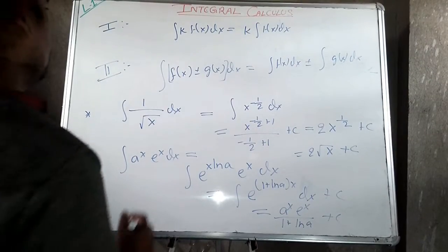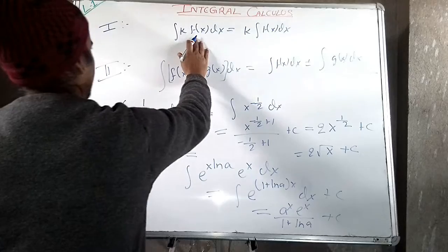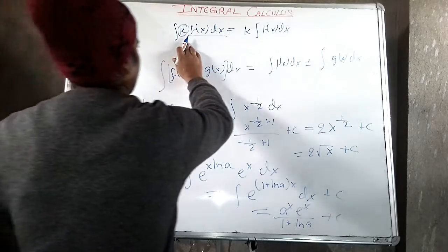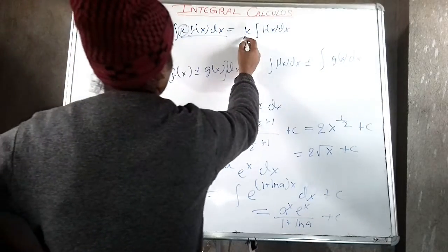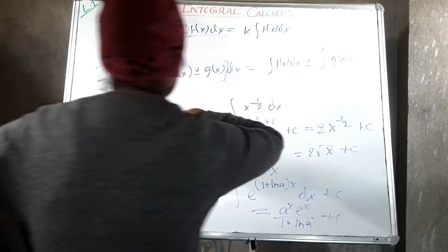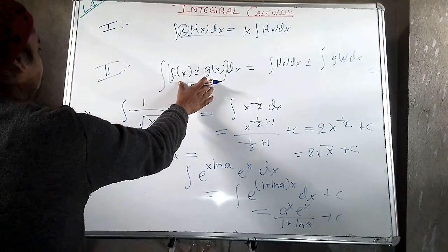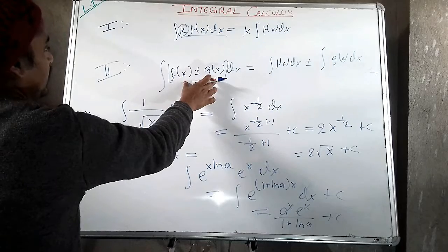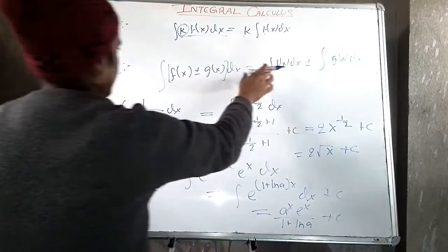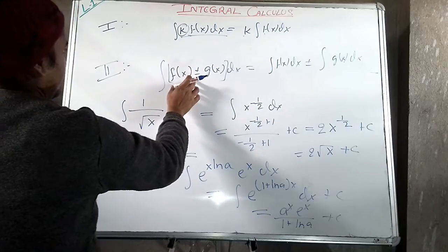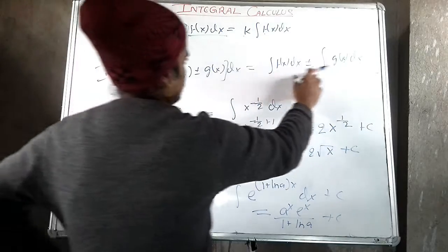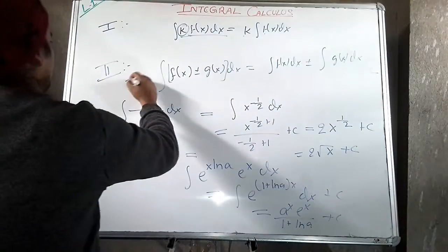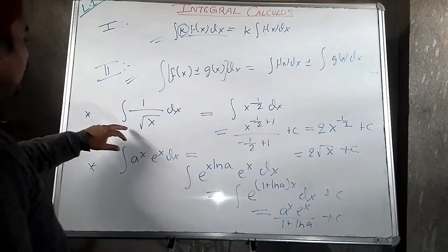Now two important theorems of integral calculus: First, if an integral equation is multiplied by a constant factor k, we can take that constant factor outside, so it becomes k·∫f(x)dx. Second, if there are two different functions f(x) and g(x) integrated as a whole, we can write them as individual integrations: ∫f(x)dx and ∫g(x)dx separately.